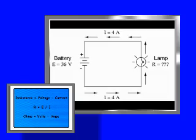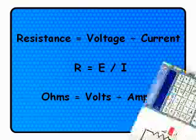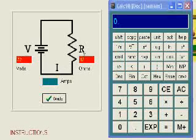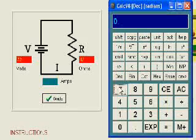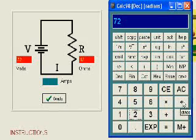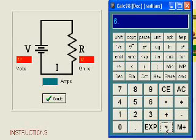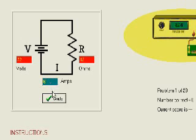Let's take an example. Here is a circuit problem. What is the current in this circuit? Ohm's law says that current equals voltage divided by resistance. So we take the voltage, 72 volts, divided by the resistance, 12 ohms, and we get 6 amperes.